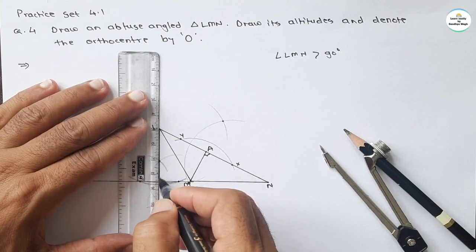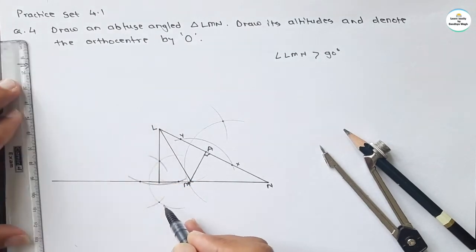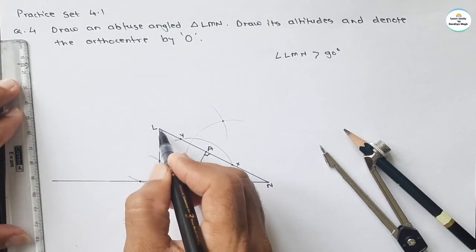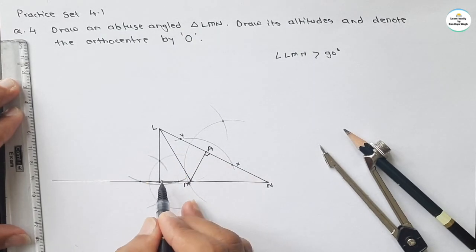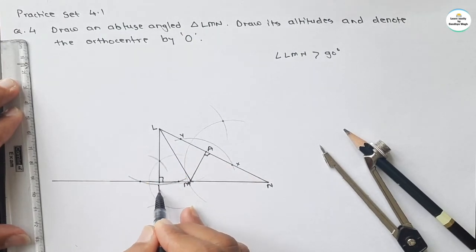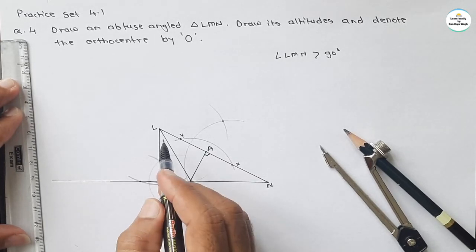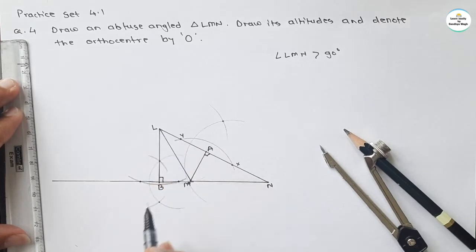If we join these two intersecting points you will get an altitude. Point L and these two intersecting points lie in a straight line. Join this line — you will get the altitude. Let it be named B, so LB is the altitude from vertex L to line MN.